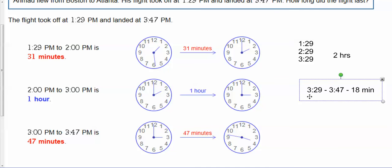That's how I would have done it. So I take care of the hours first, the full hours first, and then go around to the minutes. So 2 hours and 18 minutes. Got the exact same answer. Just took a different path to get there. And that is elapsed time.